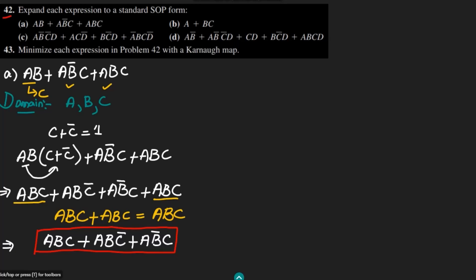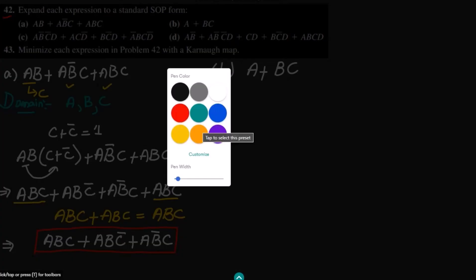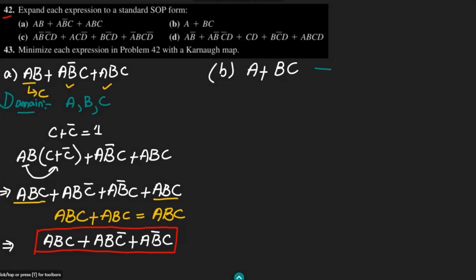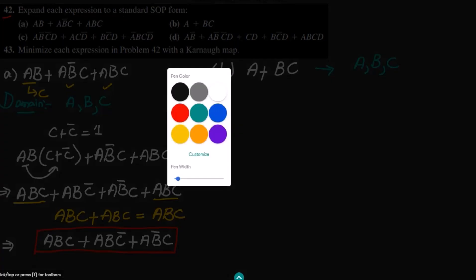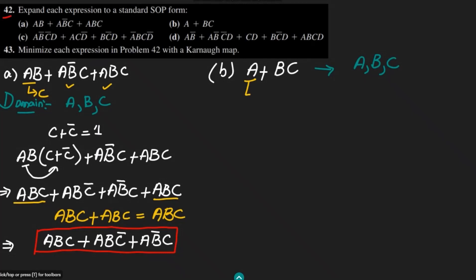For part B, we have a + bc. The domain of it is again a, b, c. We can see that the first term 'a' has a deficiency of both b and c, and the second term 'bc' has a deficiency of a.